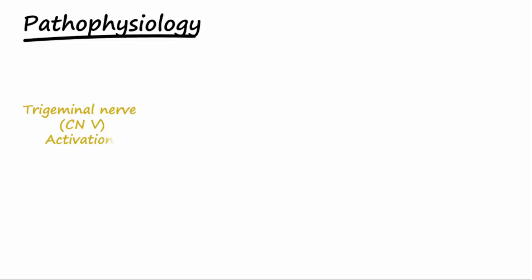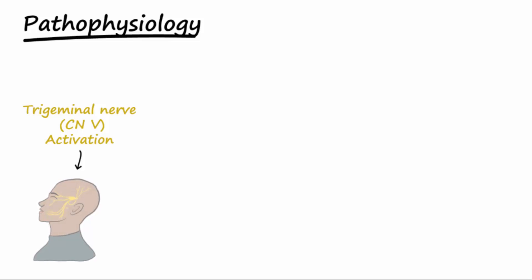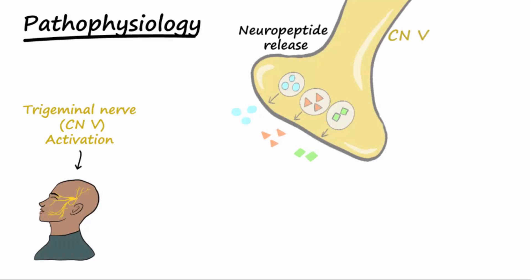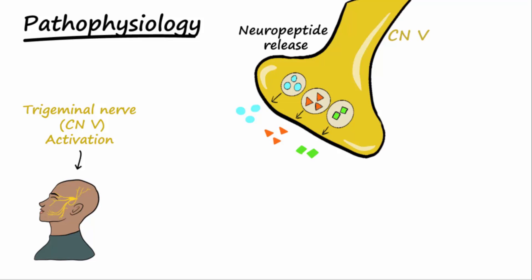During a migraine, the trigeminal nerve — cranial nerve 5 — becomes activated. This results in the release of neuropeptides from cranial nerve 5. The neuropeptides include vasoactive inhibitory peptide (VIP), substance P, and calcitonin gene-related peptide (CGRP).